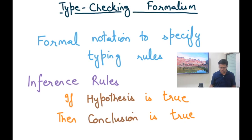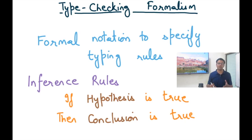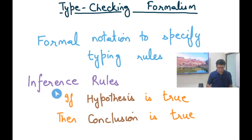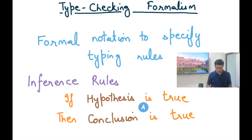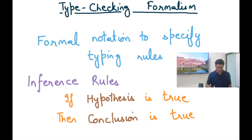To specify the rules, we introduce a type checking formalism — a formal notation used to specify typing rules precisely. Instead of using English, we define a small logical language to express what is of what type. This formalism takes the shape of inference rules. An inference rule is a statement of the form: if a hypothesis is true, then a conclusion is true. When specifying an inference rule, we simply state the hypothesis and the conclusion.